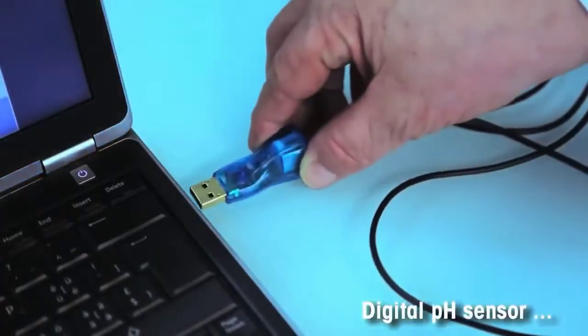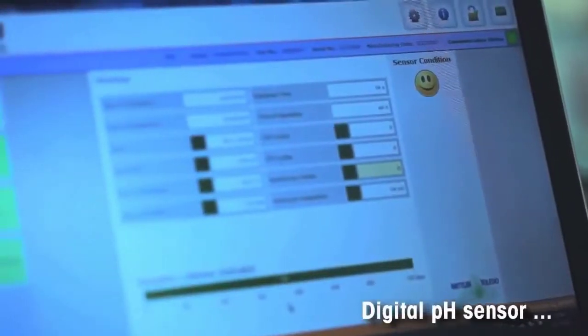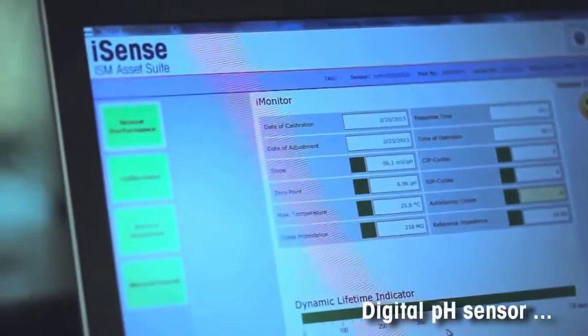At the end of the batch, connect the sensor to iSense, which displays all relevant data such as exposure to SIP cycles.